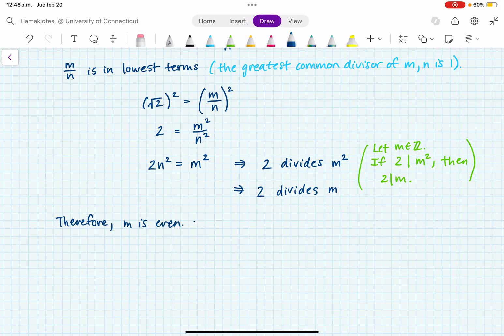So if m is even, then we can write it as 2k for some integer k. Now let's substitute that back into 2n squared equals m squared.